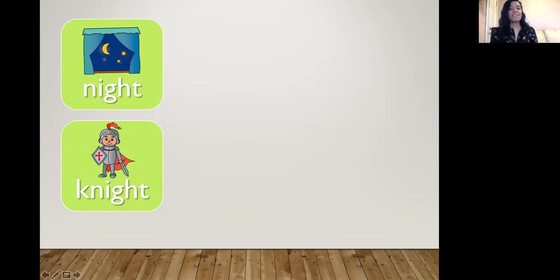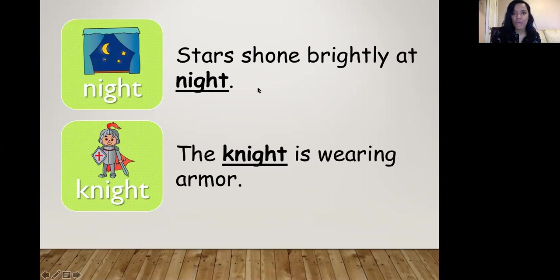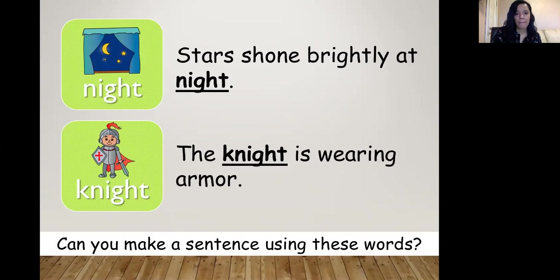Night and knight. We have the night where we go to sleep. And then we have the knight where it's nice tall soldier. Lola's laughing at me. The star shone brightly at night. The knight is wearing armor. So they sound the same, but they're very different. Can you make a sentence using these words? Just try to say them out loud.